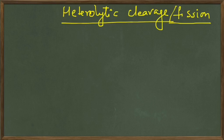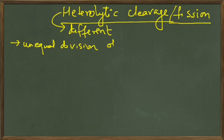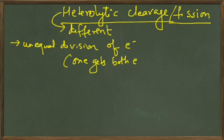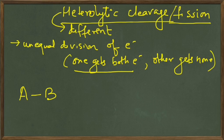Now let's talk about heterolytic fission. 'Hetero' means different, so when a bond breaks heterolytically, the division of electrons is unequal. Since every bond has two electrons, one of the species will get both the electrons and the other will get none. The more electronegative species will get both electrons. For example, if we have a bond between A and B and break them heterolytically, either A or B will take both electrons and the other will be left with none.